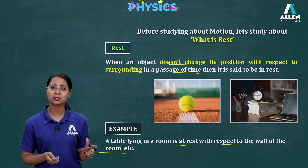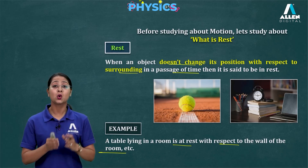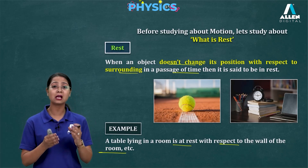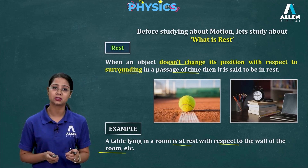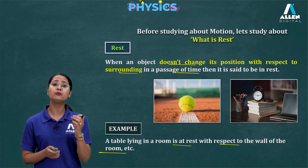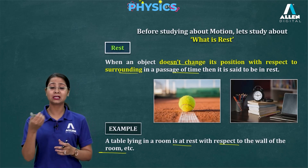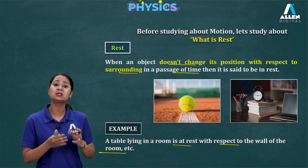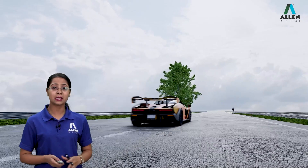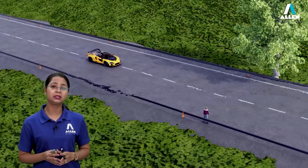Now can we define motion? Yes, definitely we can. Motion is when the object changes its position with respect to time and with respect to a fixed point — then the object is said to be in motion. We have seen an example of a moving car: if you are standing near a road and the car is moving, the car is changing its position with respect to you, which means the car is in motion. So we have discussed rest and motion, and both are relative terms.